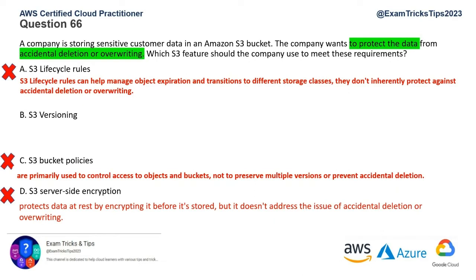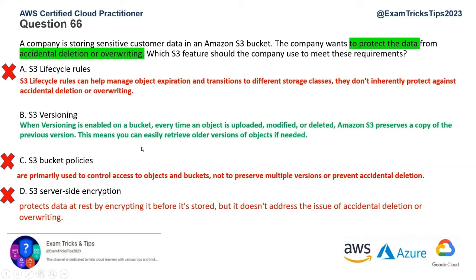In terms of S3 versioning features: it preserves multiple versions — when versioning is enabled on a bucket, every time an object is updated, modified, or deleted, Amazon S3 preserves a copy of the previous version, so you can easily retrieve older versions. Recovery from unintended actions: if an object is accidentally deleted or overwritten, you can restore it to a previous version. Protection against application errors: even if an application accidentally overwrites data, you can retain the previous version to ensure data integrity. So S3 versioning is the answer. Topics like encryption, lifecycle rules, bucket policies, and versioning could all come up in different question formats.